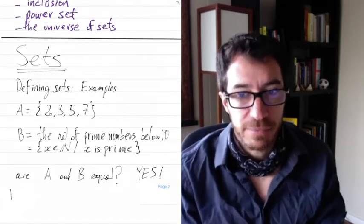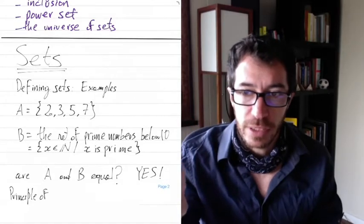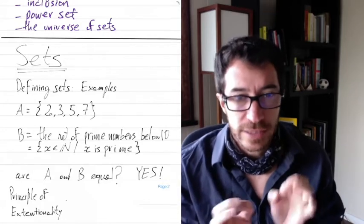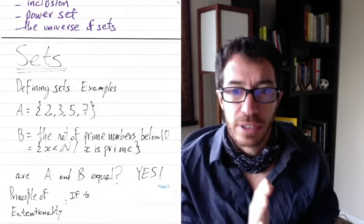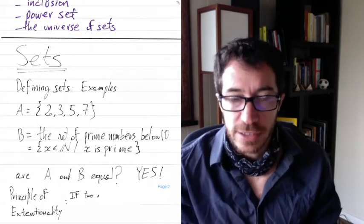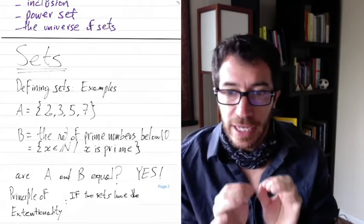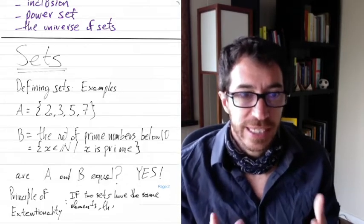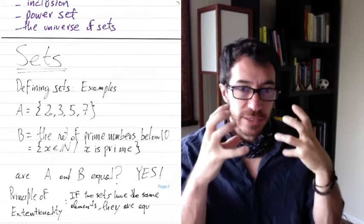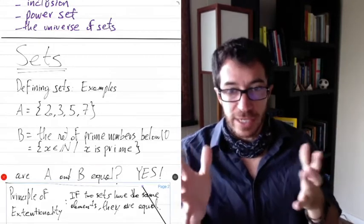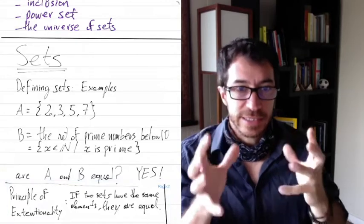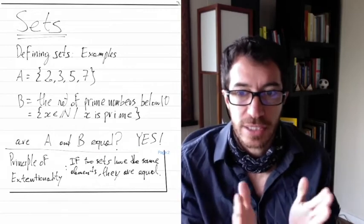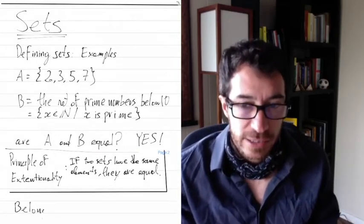Why are they equal? They have exactly the same elements. A has 2, 3, 5, 7. What are the prime numbers below 10? 2, 3, 5, and 7. So this is something we'll mention next time - the principle of extensionality. It's actually going to be an axiom that says if two sets have the same elements, then they are the same set. These sets are the same, not just equal - they are exactly the same thing. A set is identified essentially by what's inside it.